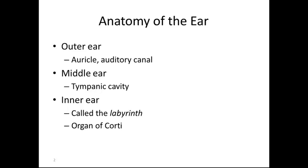The outer ear consists of the auricle, auditory canal, and the pinna. The middle ear consists of the tympanic cavity, which includes the incus, malleus, and stapes. The inner ear is called the labyrinth, and the organ of Corti, also called the cochlea.